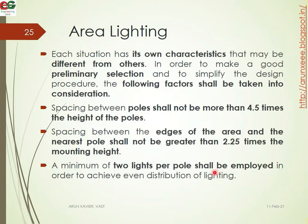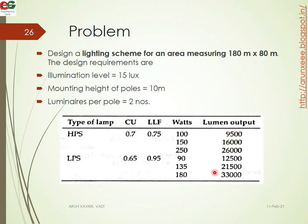A minimum of two lights per pole shall be employed in order to achieve even distribution of lighting. Design problem: design a lighting scheme for an area of 180 meters by 80 meters, with a mounting height of 10 meters and two lamps per pole. Different types of lamps such as HPS and LPS are available, with given coefficient of utilization and watt output values.